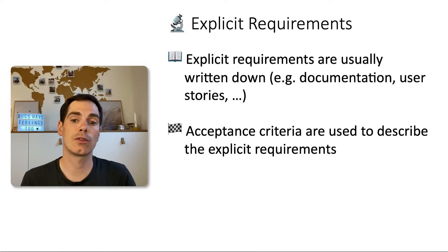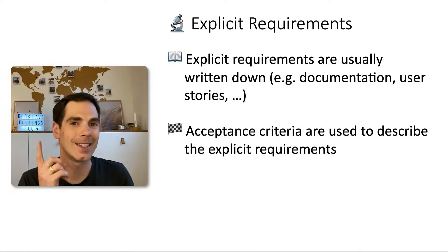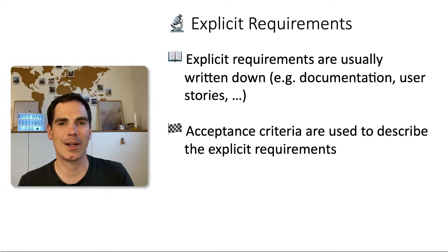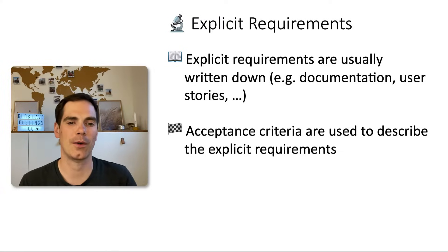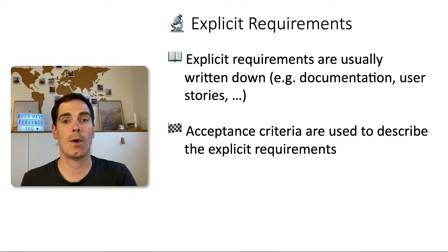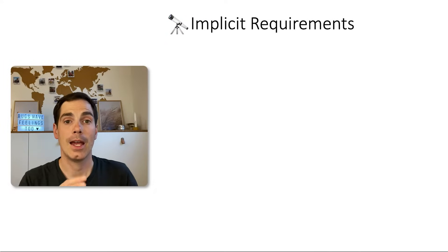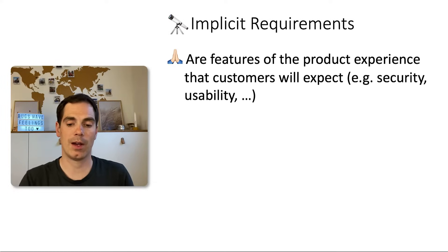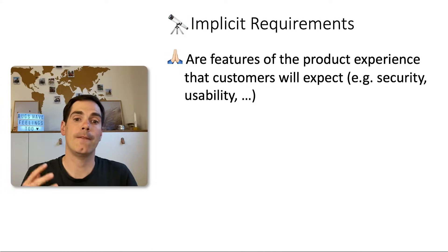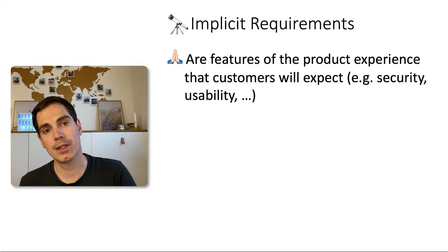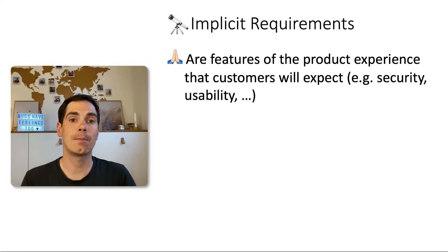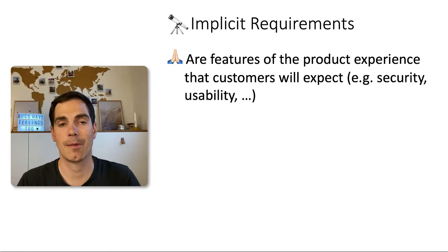Acceptance criteria are used to describe explicit requirements. In case you don't have acceptance criteria in a ticket, you should talk to someone in your team — your product manager or whoever is defining the user stories — because acceptance criteria are usually a good starting point for meeting the requirements of your service, product, or feature that you're going to develop and test. So what is an implicit requirement? Implicit requirements are basically features of the product experience that customers will expect.